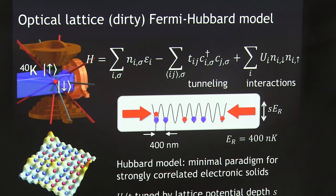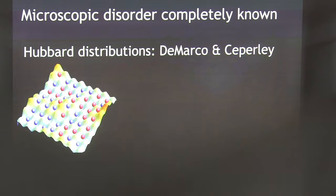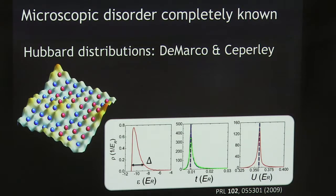So that's how we tune these parameters. A really important aspect of this experiment — and one reason it's an interesting experiment from the point of view of experiments on solids — is that we know all those distributions of Hubbard parameters. Many years ago we worked with David Ceperley's group to do a Hubbard decomposition of this potential which is basically measured again. Here's what the distribution of Hubbard parameters looks like. A clean system would be one tunneling energy and one interaction energy, and we typically wouldn't keep track of the site energy because they'd be the same everywhere. Now we have distributions.